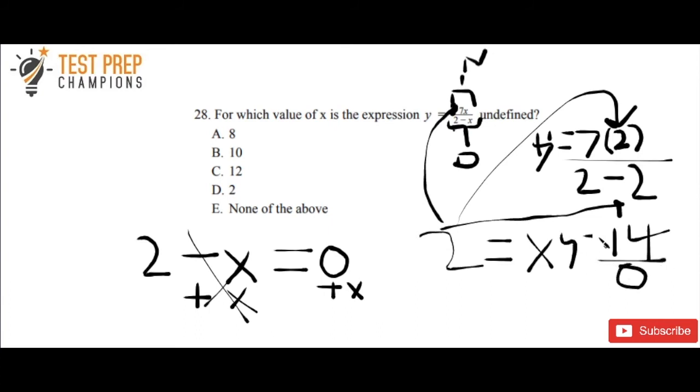And 2 minus 2 is 0. So you can see that the expression is undefined now because we can't divide by 0. You're going to get an error message. And again, if you don't believe me, put that in your calculator. It's going to give you an error. Divide by 0 error. So the answer here is that for which value of x is the expression undefined, it's going to be 2.